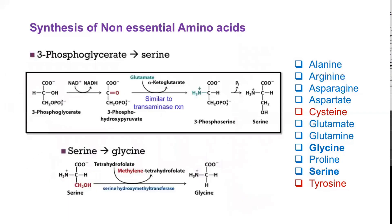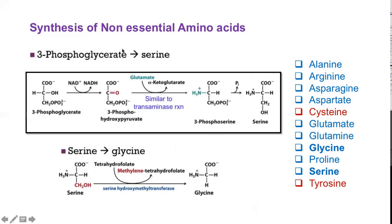3-phosphoglycerate forms the precursor molecule for the formation of serine. Here, 3-phosphoglycerate gets converted to an intermediary 3-phosphohydroxypyruvate, which in the presence of glutamate and a transaminase enzyme gets converted to 3-phosphoserine and later to serine. This serine in turn gets converted to the simplest amino acid glycine, with the help of the enzyme serine hydroxymethyltransferase in the presence of tetrahydrofolate (THF). So serine is formed from 3-phosphoglycerate, and from serine, glycine is formed in the presence of THF.